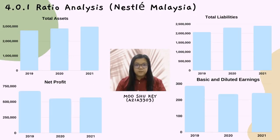Hi, my name is Mo Shuki, my metric number is 218-3303. I am going to present the ratio analysis from 2019 to 2021 of Nestlé Malaysia. The four key financial figures are total assets, total liabilities, net profit, and basic and diluted earnings. Total assets and total liabilities likely increased from 2019 to 2021, while net profit and basic and diluted earnings decreased in 2020 and increased in 2021.